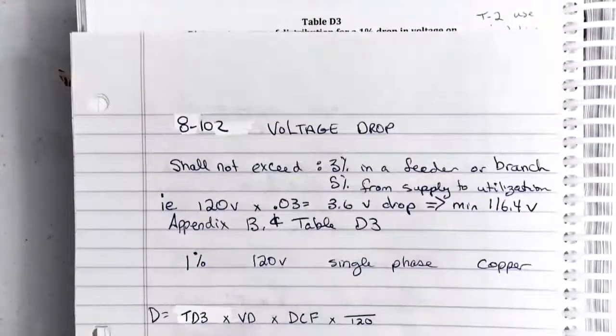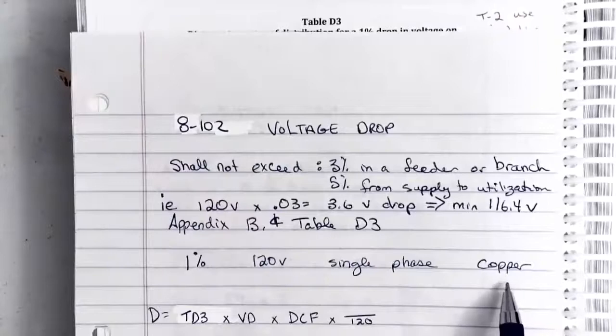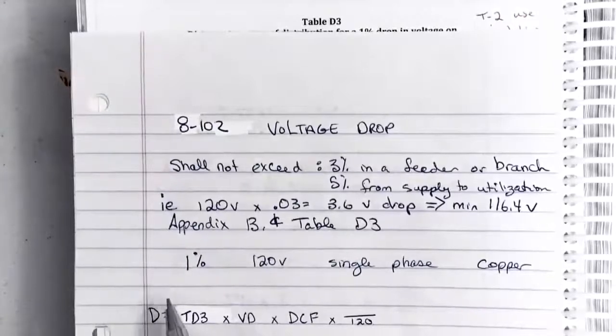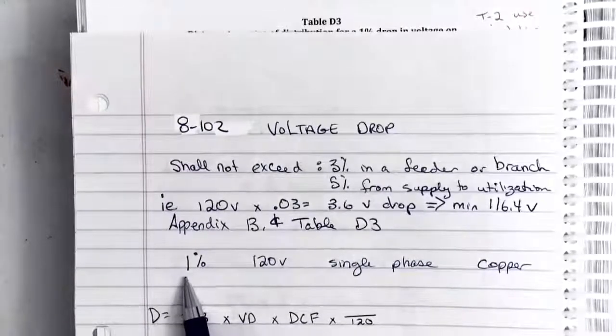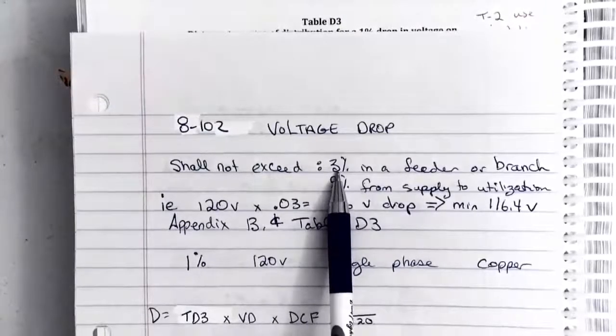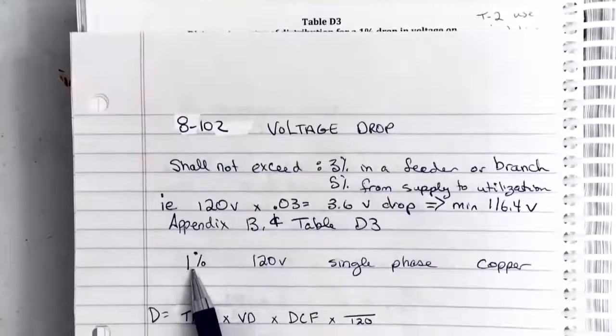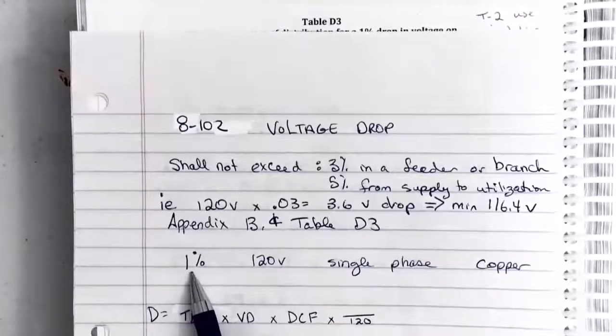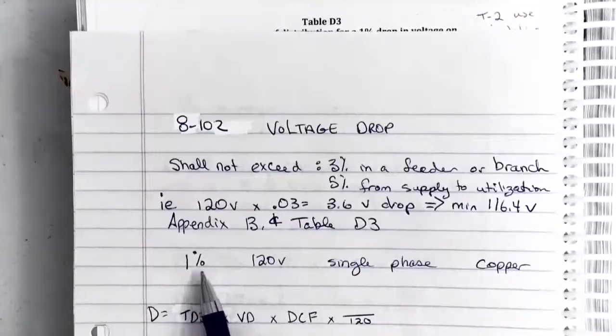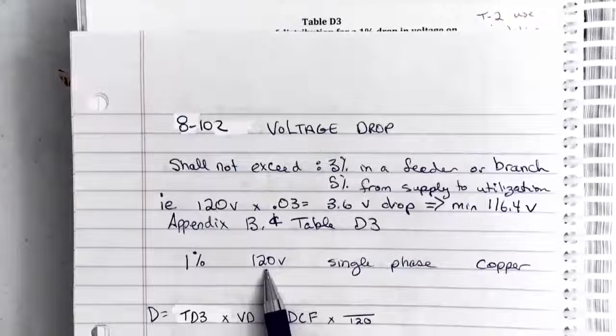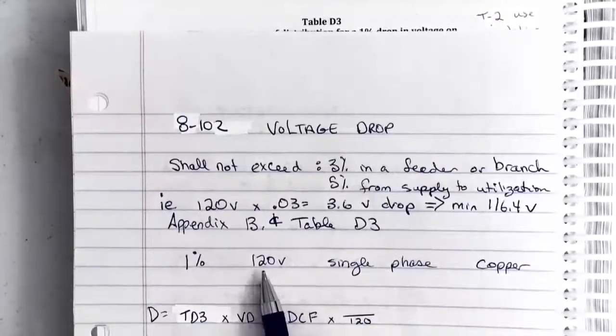Table D3, if you notice, these values are written down here: 1%, 120 volts, single phase and copper. Now these are the parameters that Table D3 was designed and built around, and so sometimes we'll end up adjusting for these numbers. For example, if we're in a branch circuit and we're looking for a maximum of 3% and the table was built for 1%, we're going to replace that part of the formula with 3% instead of 1%. If the voltage of the circuit that we're actually trying to figure out the voltage drop in is more than 120 volts, we're going to have to adjust this formula to match the voltage in our actual circuit.